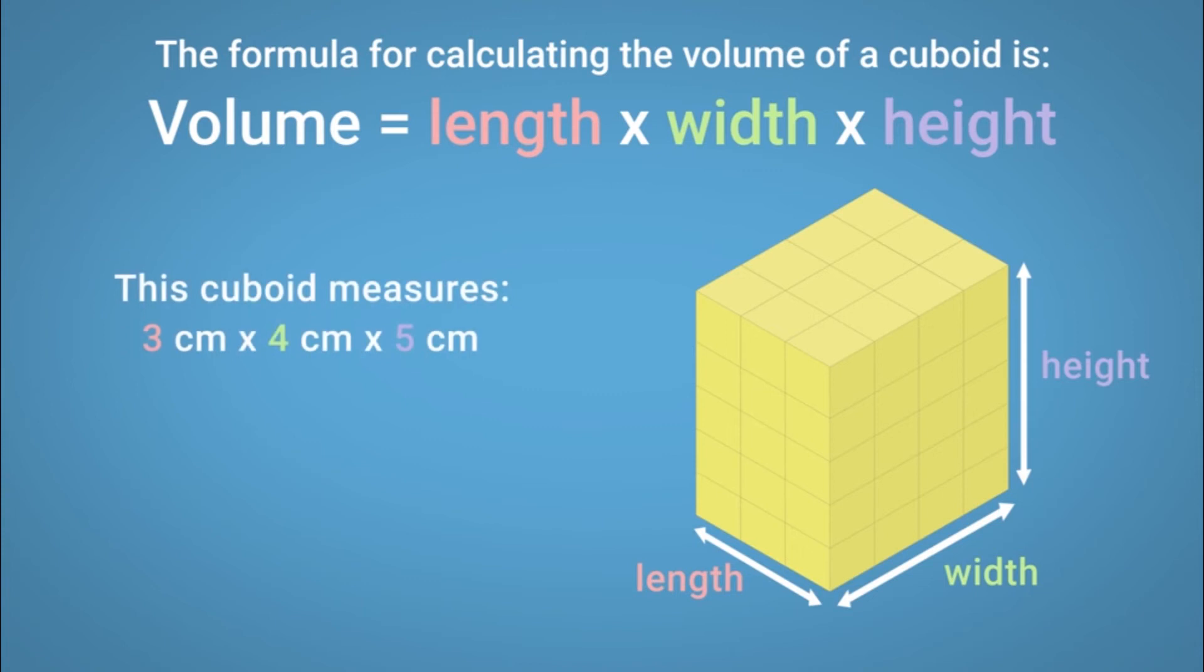This cuboid measures 3cm by 4cm by 5cm. So the volume equals 3cm by 4cm by 5cm equals 60cm cubed.